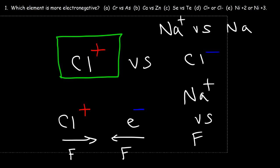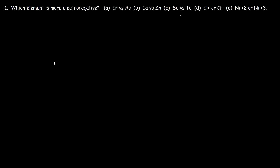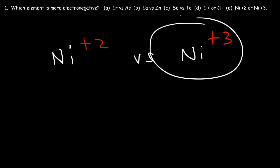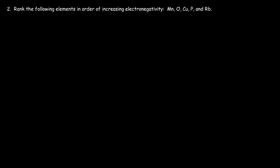Part E: let's compare the nickel 2+ cation with the nickel 3+ cation. Both may have a desire for an electron, but the nickel 3+ cation has a stronger desire because it has a higher positive charge and the element is the same. When the element is the same, the ion with the most positive charge is usually the most electronegative, and the one with the greatest negative charge is usually the least electronegative.